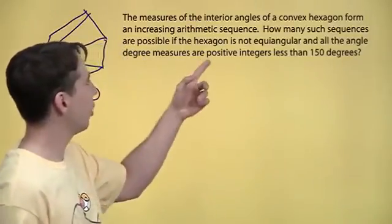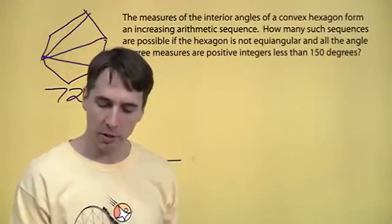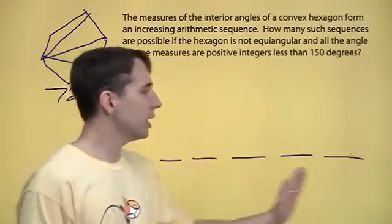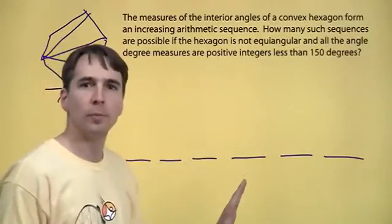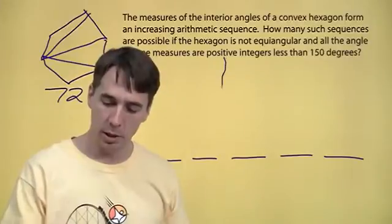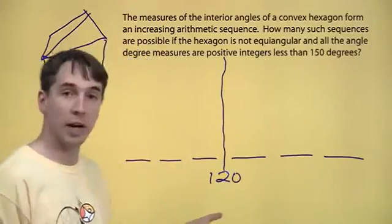So we've got six angles. They form an arithmetic sequence, so they're equally spaced out. I'll go ahead and draw some blanks for them just like we did last time. And we know that because they're equally spaced out, we know that their average, their mean is right in the middle. And their six numbers, they add up to 720, so that mean is, they add up to 720, so the mean is 120. 720 divided by six.